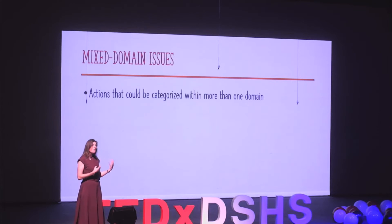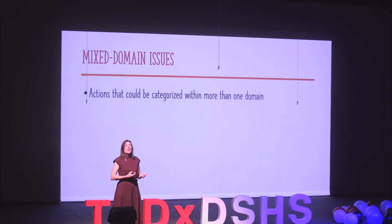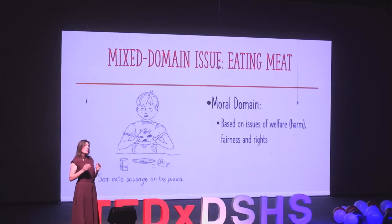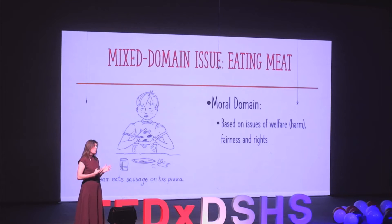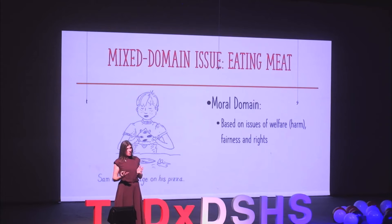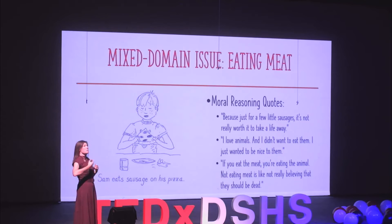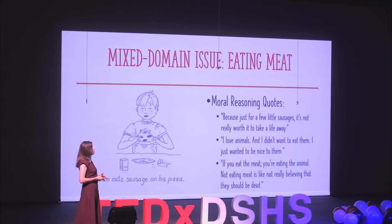Since those topics aren't appropriate for young research participants, I focused on the act of eating meat as a mixed domain issue. For some children, they look at it through a moral lens — focusing on the harm and suffering animals endure as they're raised for meat and go through the slaughtering process, as well as animal rights. The quotes from my research participants really highlight that harm and suffering, or their focus on animal rights — clearly interpreted from that moral domain perspective.